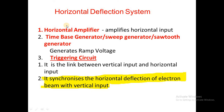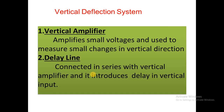The third major component of the CRO is the horizontal deflection system. The three main components are CRT, horizontal deflection system, and vertical deflection system. In the horizontal deflection system we have: horizontal amplifier, which amplifies the horizontal input; time base generator (also called sweep generator or sawtooth generator), which generates the ramp voltage; and the triggering circuit, which is a link between the vertical input and the horizontal input.